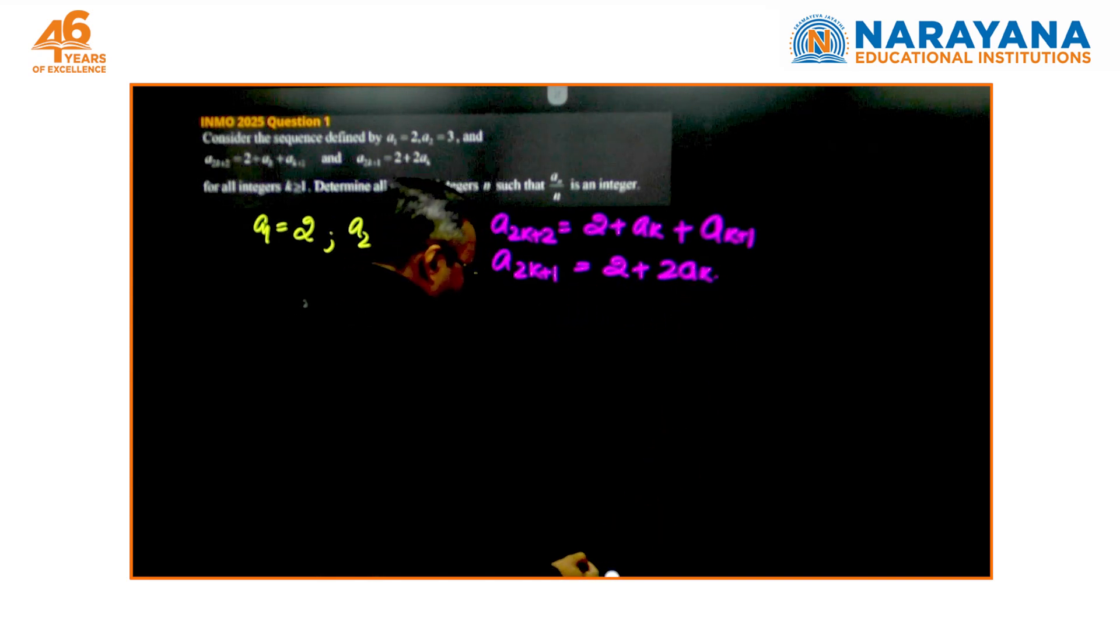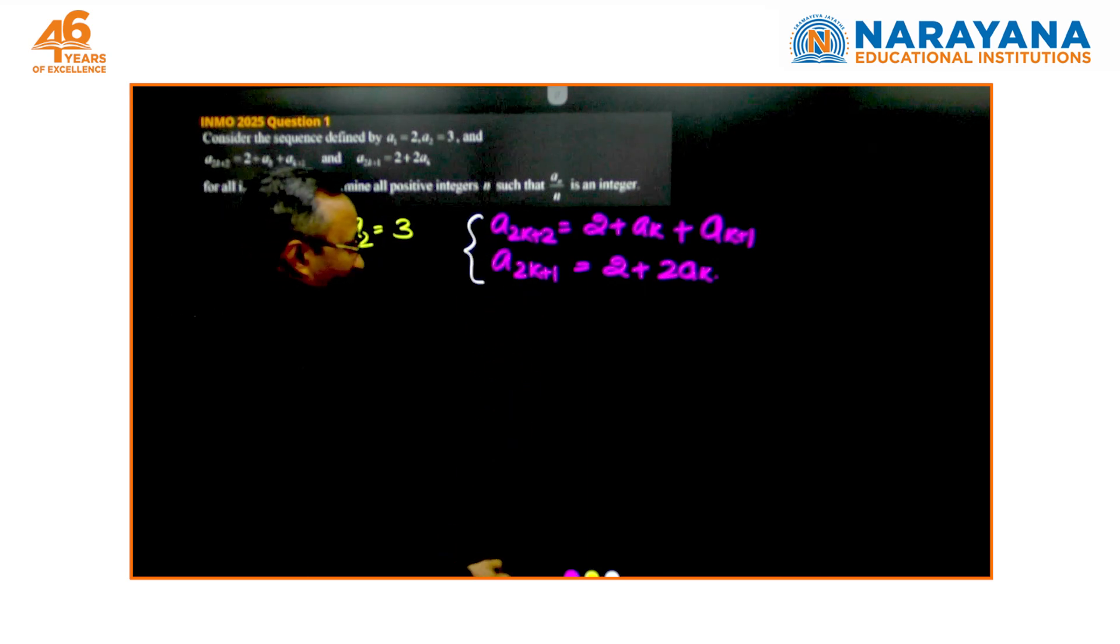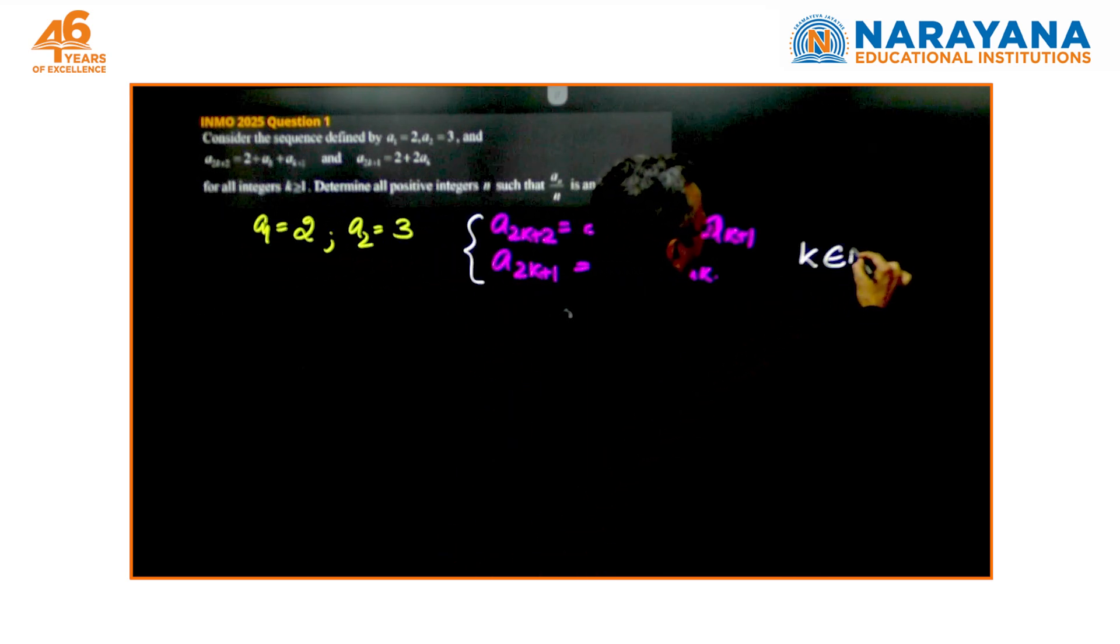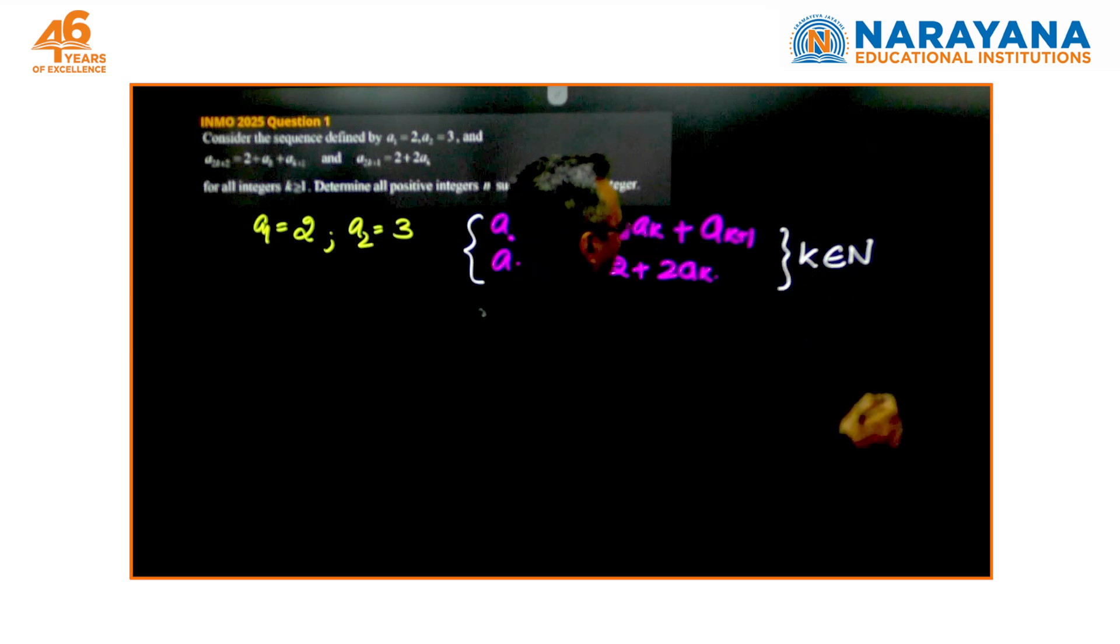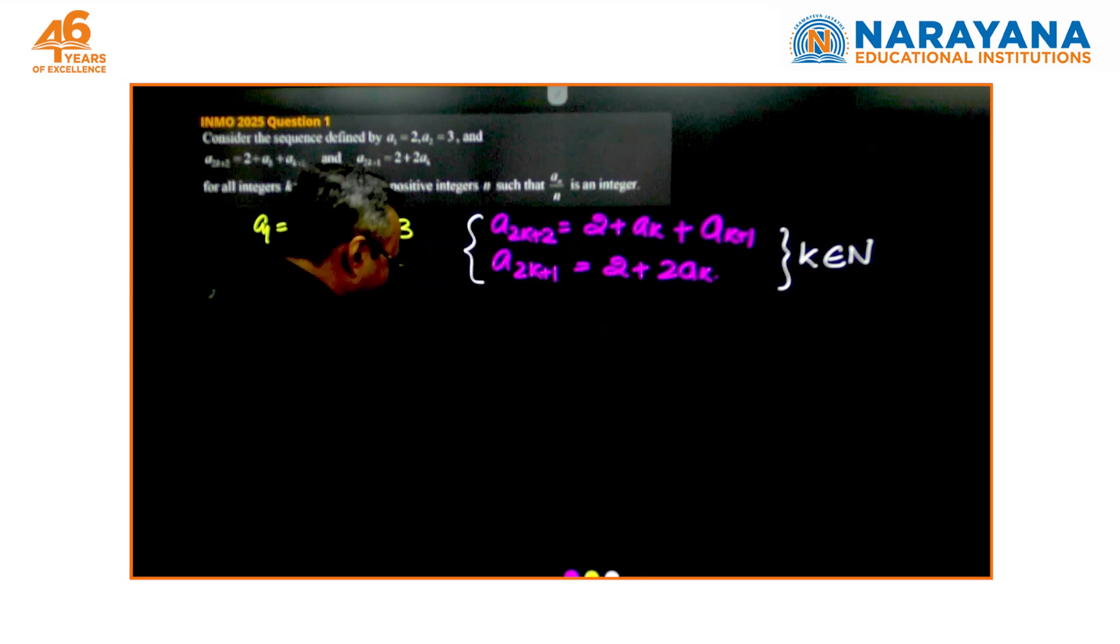Without much thought given on this, k is a natural number, as given k to be integer greater than or equal. The observations that we need to make initially to begin with this...